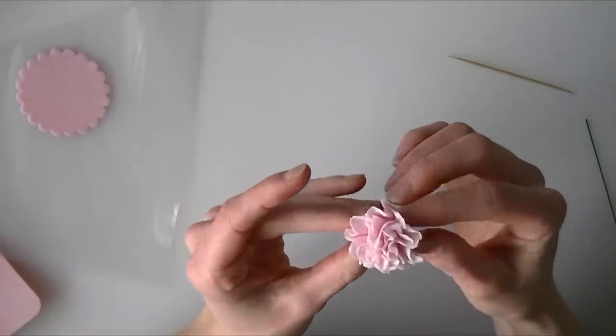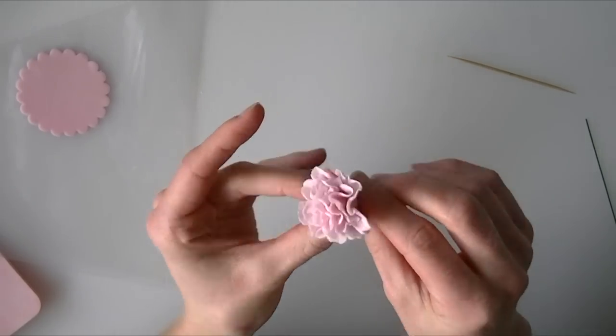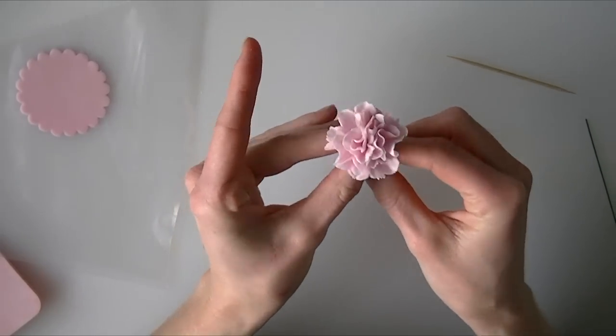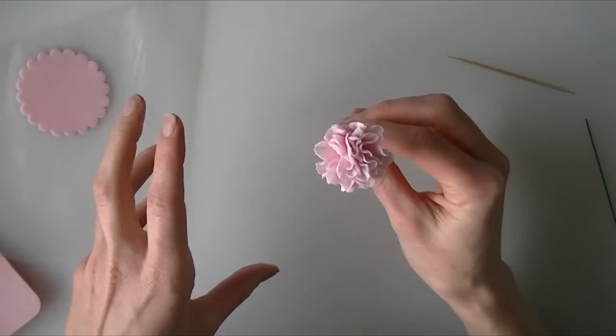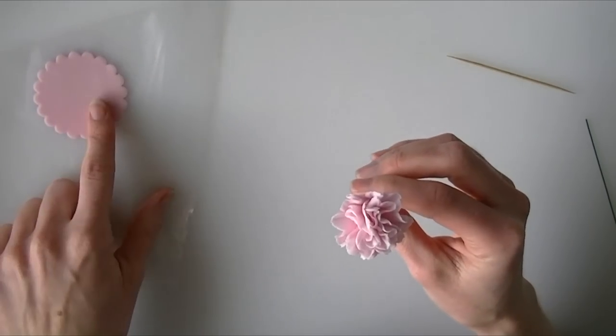So it is starting to get a little bit bigger. If you want to keep your carnation quite small you might want to stop at this point. If you want it to be bigger we are going to add another layer. For the next layer we are going to go with our bigger petal.